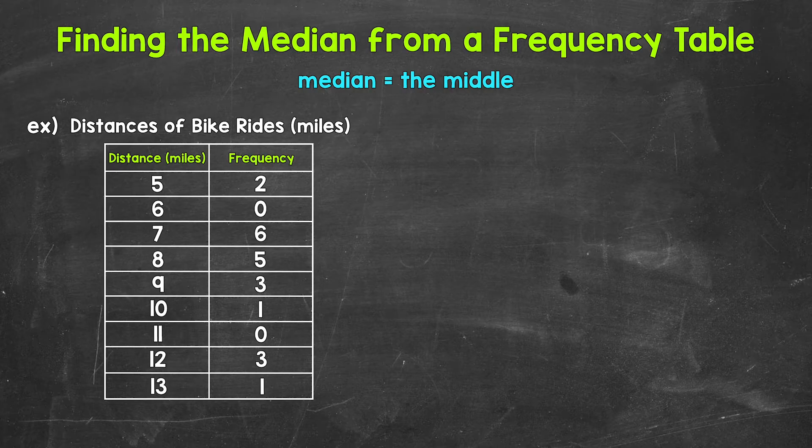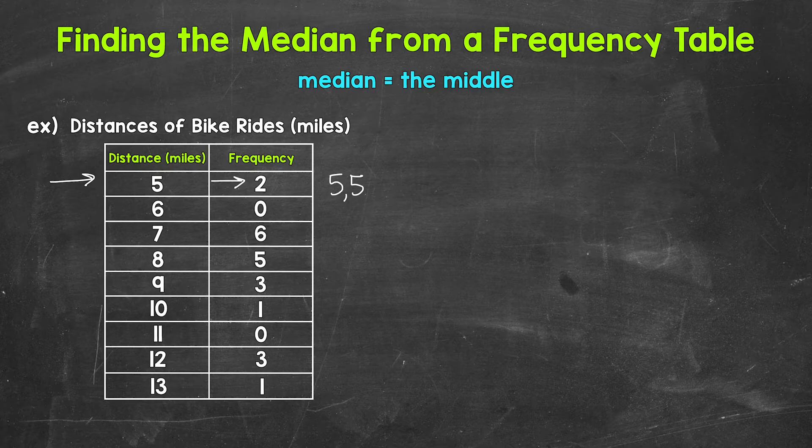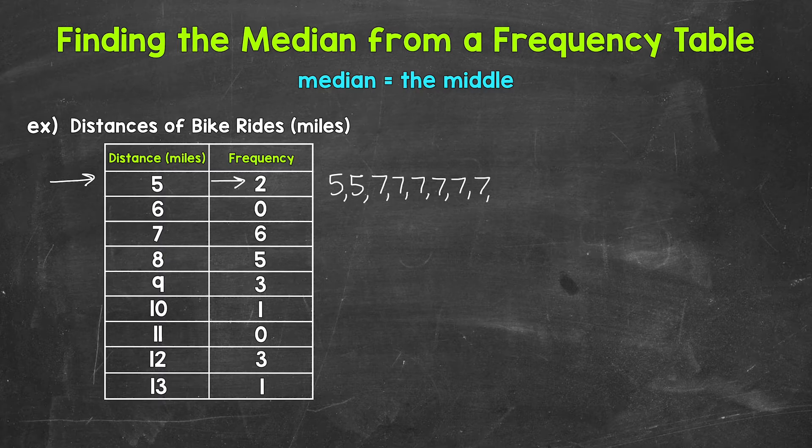Looking at the table, we start with a distance of 5 miles. And that occurred twice. So we need to start with 2 5s. Then we don't have any 6s. And then we have 6 7s. So 1, 2, 3, 4, 5, 6.